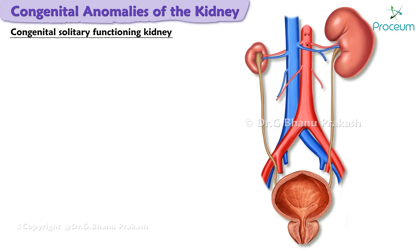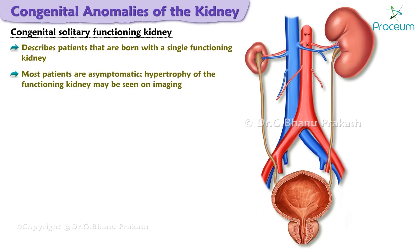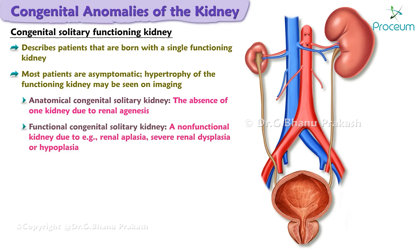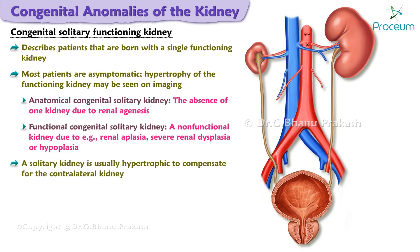Congenital solitary functioning kidney describes patients born with a single functioning kidney. Most patients are asymptomatic, and hypertrophy of the functioning kidney may be seen on imaging. Anatomical congenital solitary kidney refers to the absence of one kidney due to renal agenesis. Functional congenital solitary kidney refers to a non-functional kidney due to reasons such as renal aplasia, severe renal dysplasia, or hypoplasia.